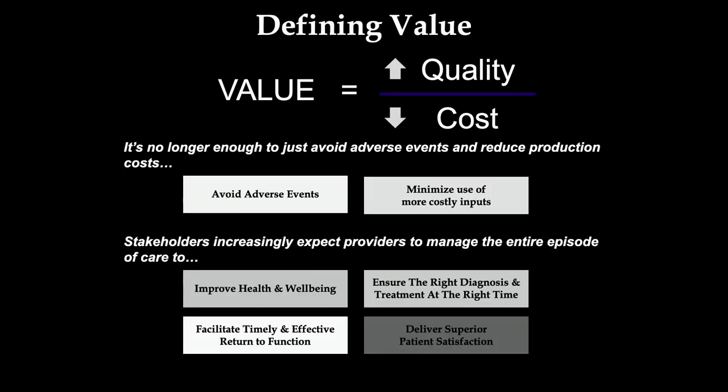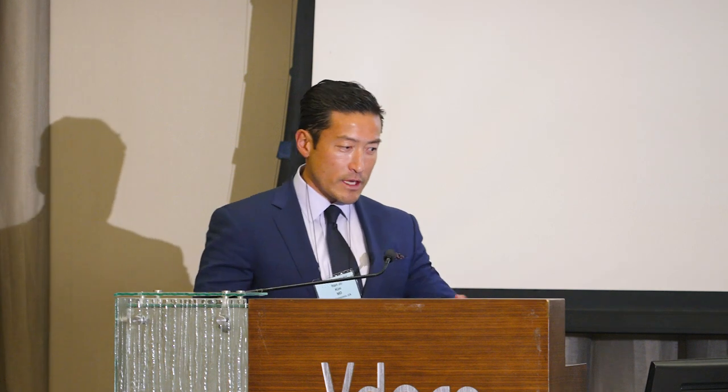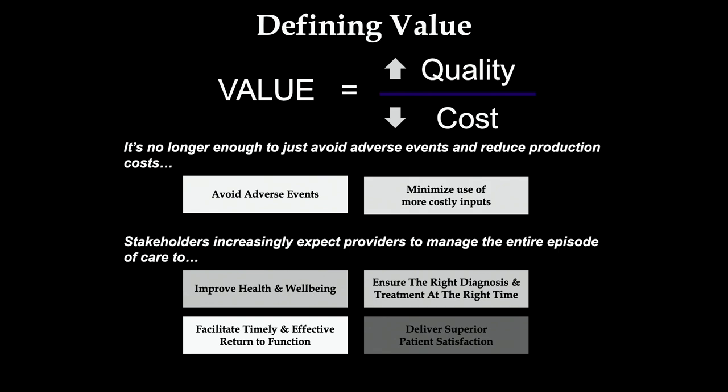If we're talking about value and increasing the value proposition for adult spinal deformity surgery, we have to keep the value equation in mind. Dr. Sethi is going to give a talk a little later on this. But the value equation is very simple: increase the quality, decrease the cost, and you make your value proposition much better. You could avoid adverse events, minimize implant costs, improve outcomes, measure them the right way, and ensure surgery is truly indicated.